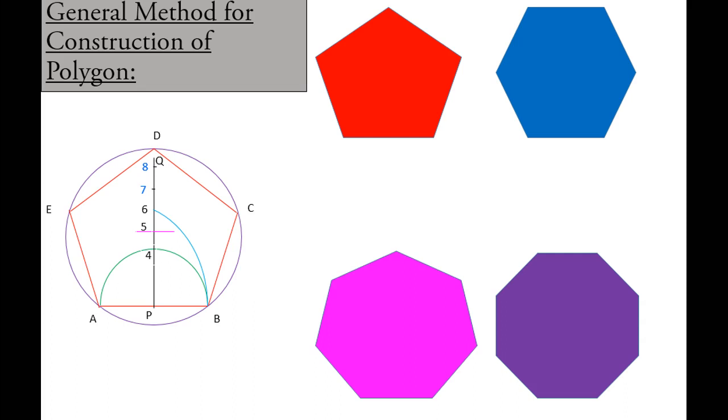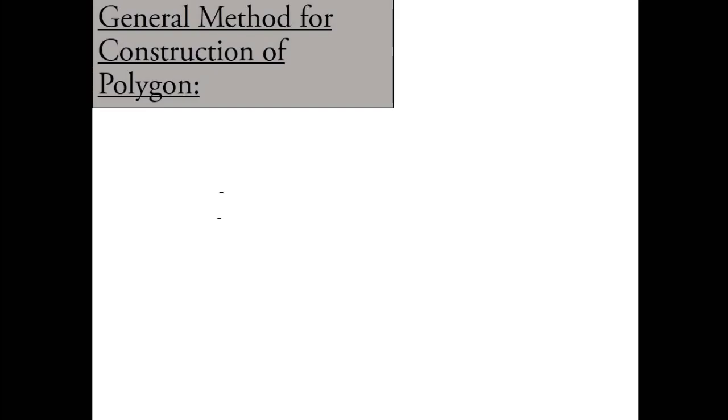In this video I am going to explain the procedure to draw the polygonal structure by using the general method. With the help of this method you can create different polygonal structures in the same diagram. We will see the procedure for how to draw that polygonal structure. The written form of the procedure will be on the right side and the diagrammatic form will be on the left side — you can observe both simultaneously.